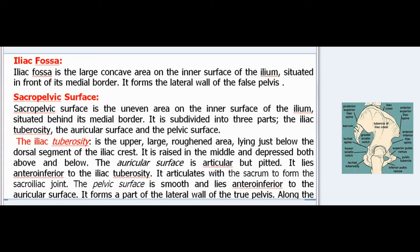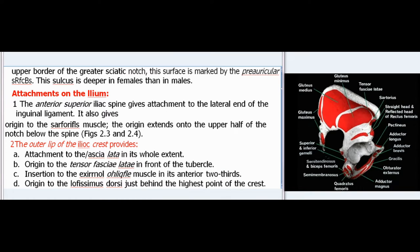The iliac fossa is the large concave area on the inner surface of the ilium, situated in front of its medial border; it forms the lateral wall of the false pelvis. The sacropelvic surface is the uneven area on the inner surface behind the medial border. It is subdivided into three parts: the iliac tuberosity, the auricular surface, and the pelvic surface. The iliac tuberosity is the upper large roughened area just below the dorsal segment of the iliac crest. The auricular surface is articular but pitted and lies anteroinferior to the iliac tuberosity; it articulates with the sacrum to form the sacroiliac joint. The pelvic surface is smooth and forms part of the lateral wall of the true pelvis.